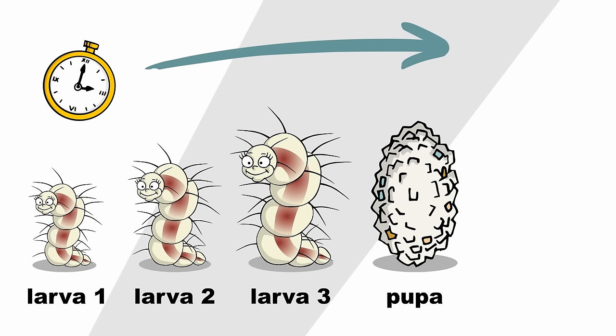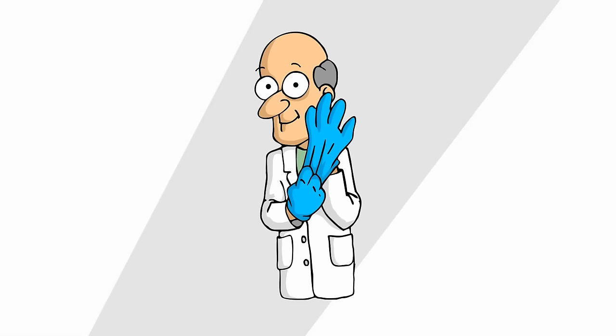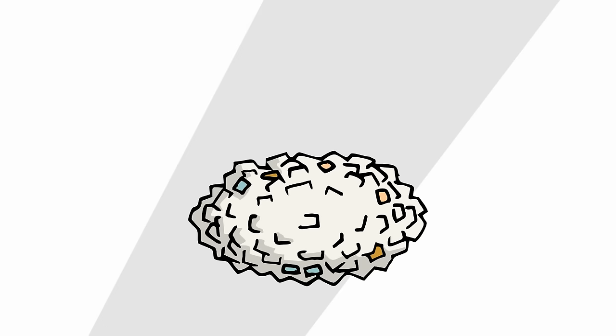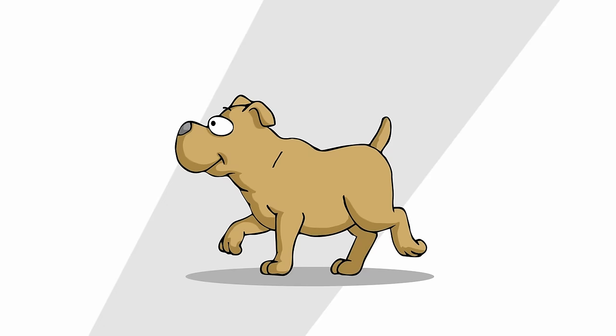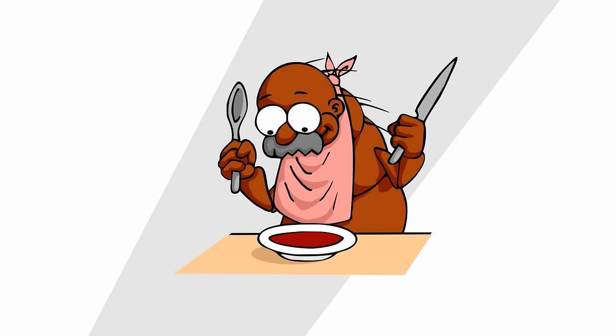Over time, the flea larva will molt twice, turn into a pupa, and eventually into an adult flea. The worm will stay with it all along like a fond memory of visiting the proctologist. Breaking out of the pupa, the flea hops onto a dog or a cat walking by, and starts feeding.